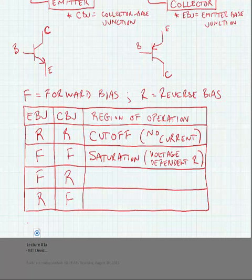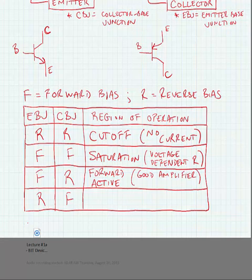If the emitter to base junction is forward biased, that diode is turned on, and the collector to base junction is reverse biased, we have what we call the forward active region. And this is the normal operating mode for the transistor, where the transistor is acting as a voltage dependent current source. This is what we would use to make a good amplifier.